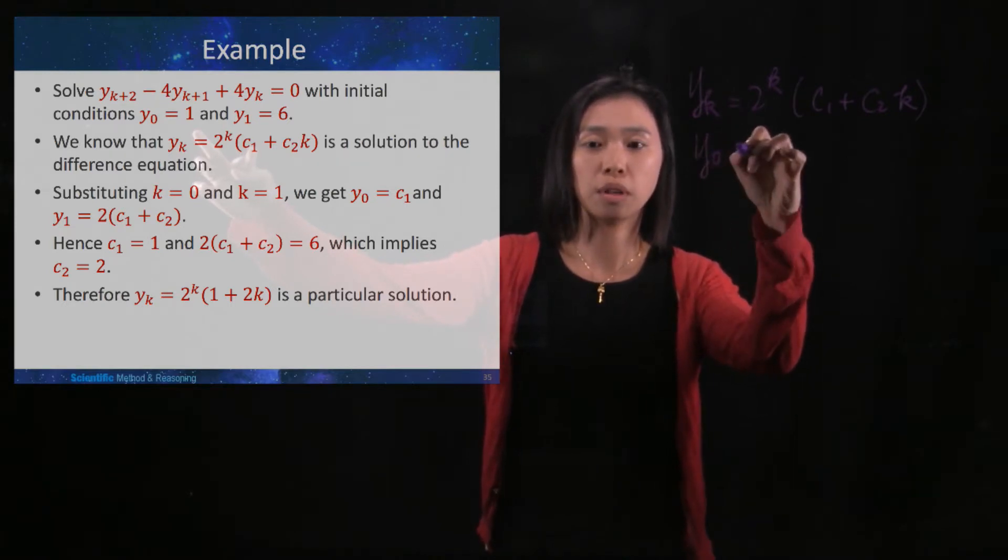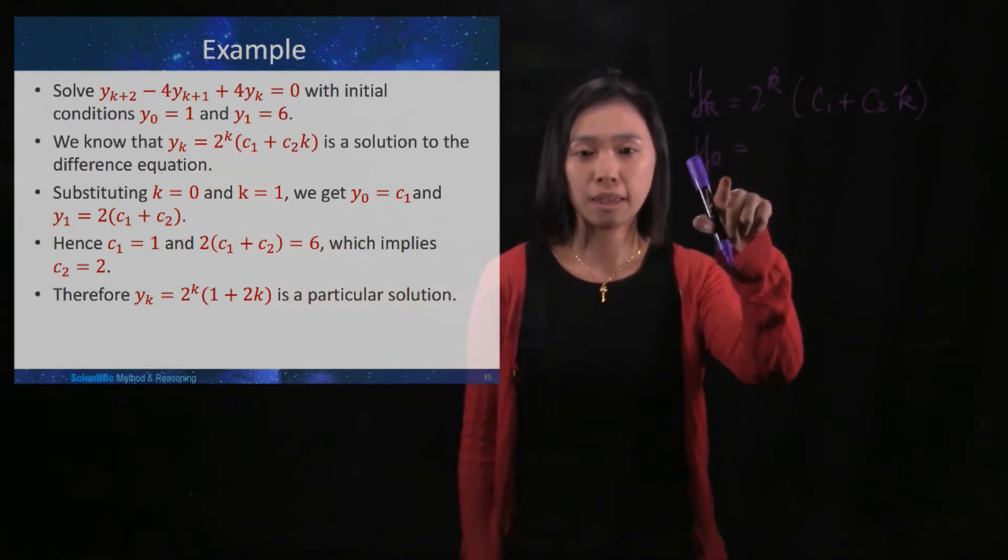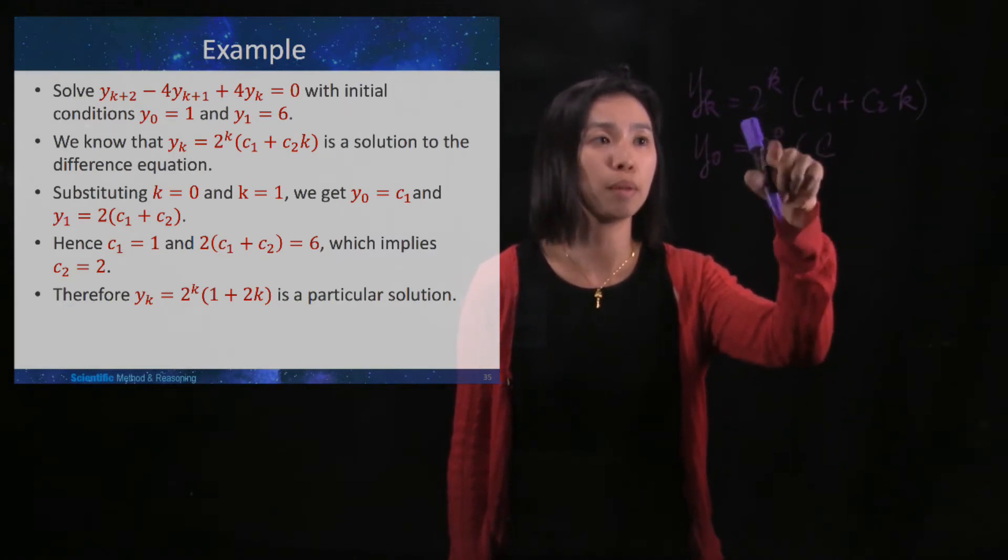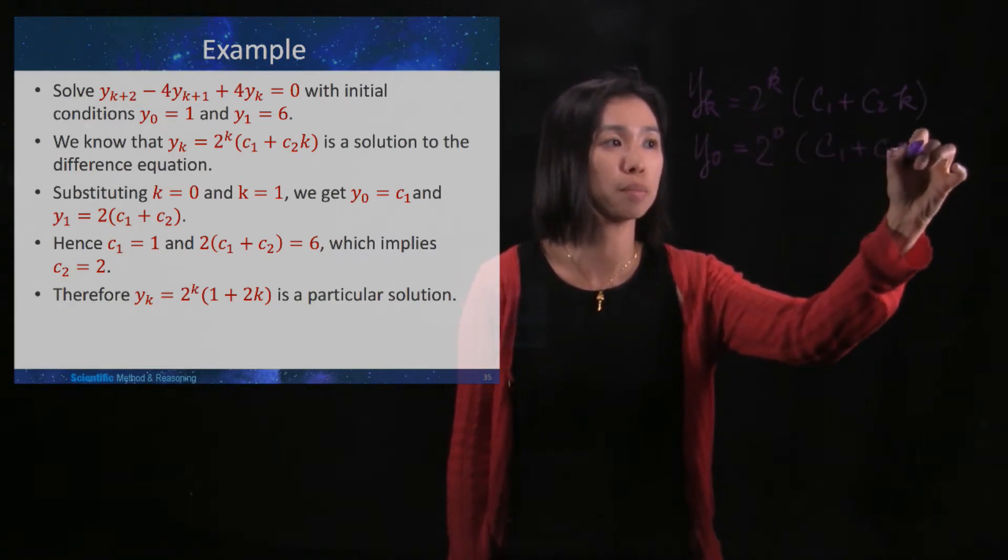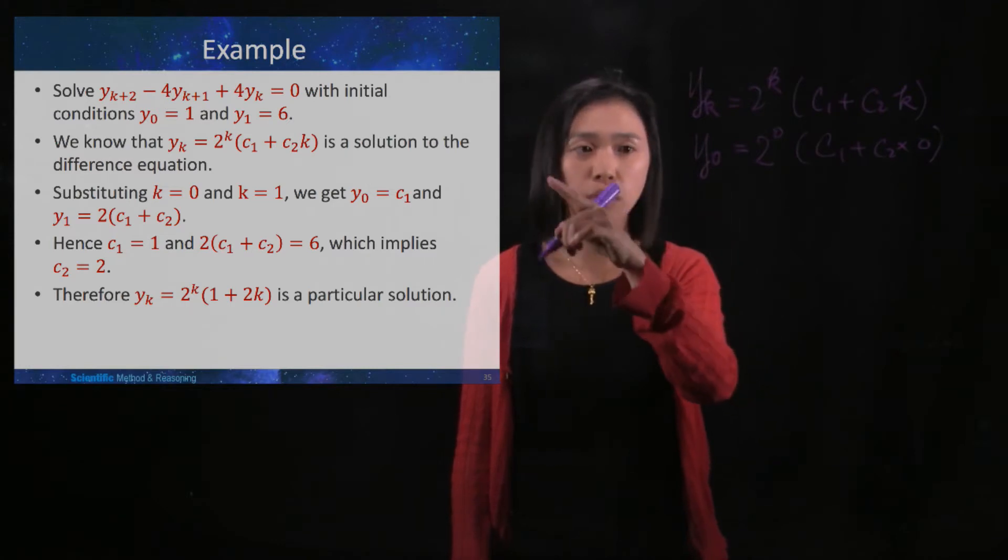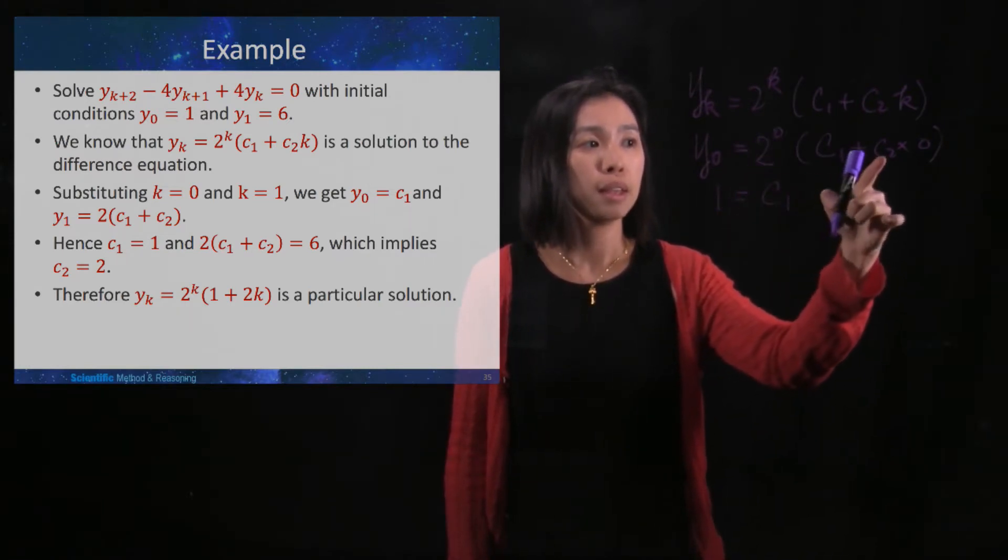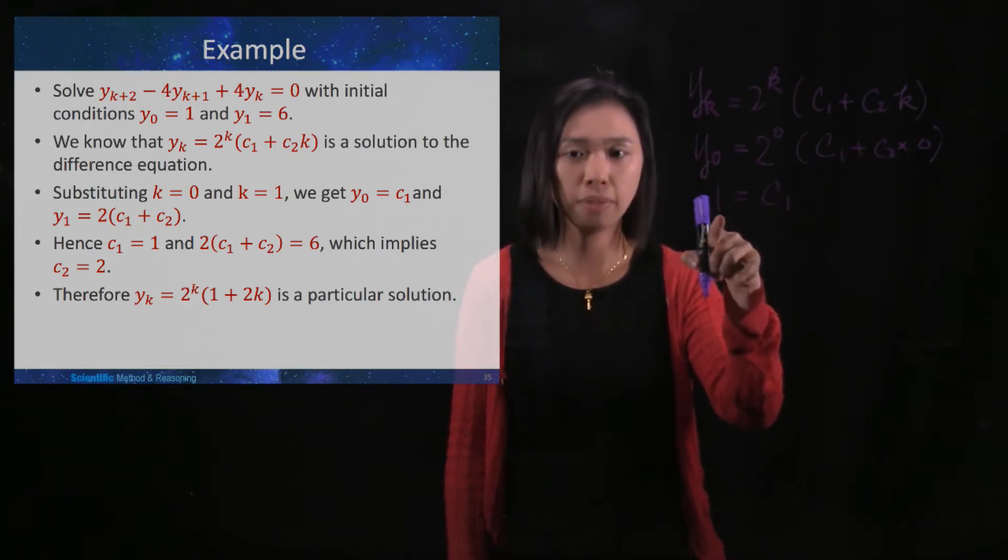So y_0 is, we substitute k by 0: 2^0 times (c_1 + c_2 times 0). y_0 is 1, and 2^0 is 1, so c_1. c_2 times 0 is 0, so c_1 is 1.